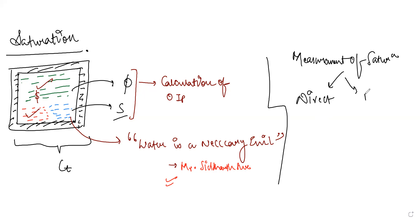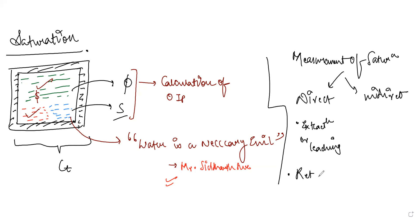Saturation can be measured in two ways: direct or indirect. Direct ways include extracting or leaching fluids — pulling out all the fluids present in the rock and calculating how much fluid came out. The other direct method is the retort method, a heat-based approach where you heat the rock sample to extract the fluids. The well-known direct method is called Dean Stark extraction.